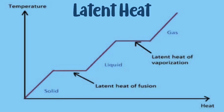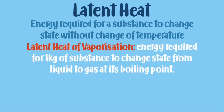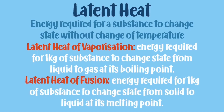Moving on to our last topic, we have latent heat. On the heating curve, the latent heat of fusion and latent heat of vaporization are labeled on the diagram. Latent heat is the energy required for a substance to change state without a change of temperature. Latent heat of vaporization is the energy required for 1 kg of a substance to change state from liquid to gas at its boiling point. Latent heat of fusion is the energy required for 1 kg of a substance to change state from solid to liquid at its melting point.